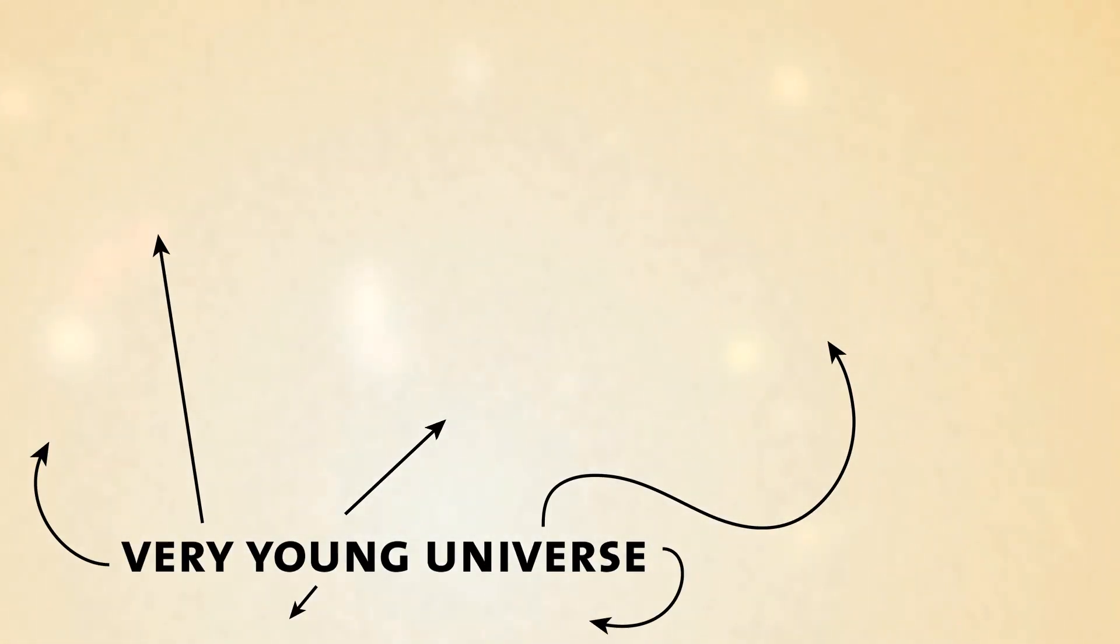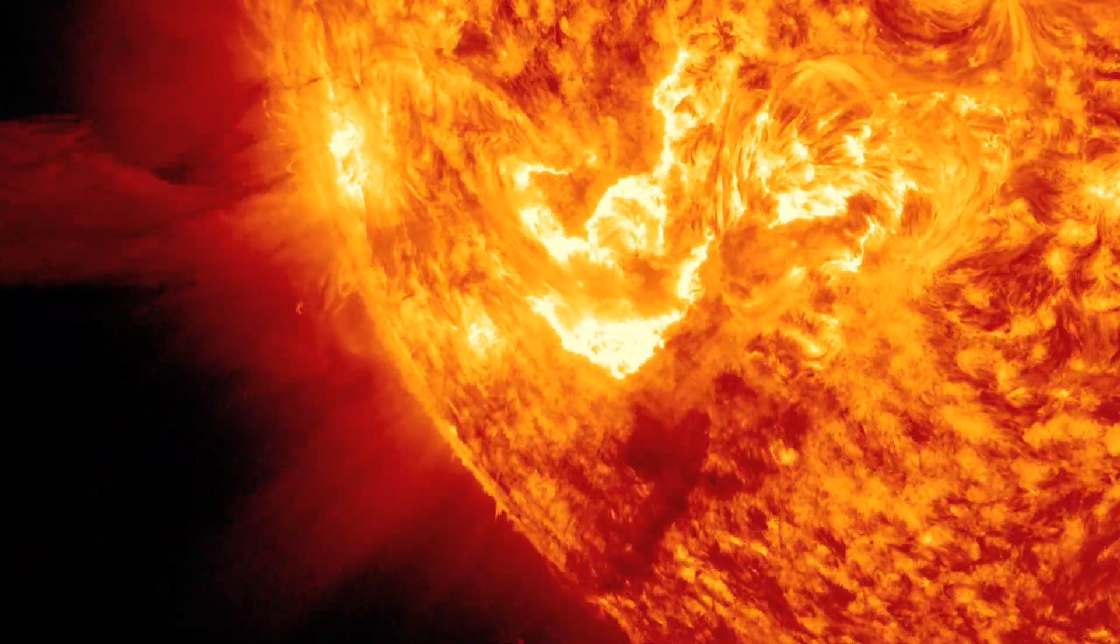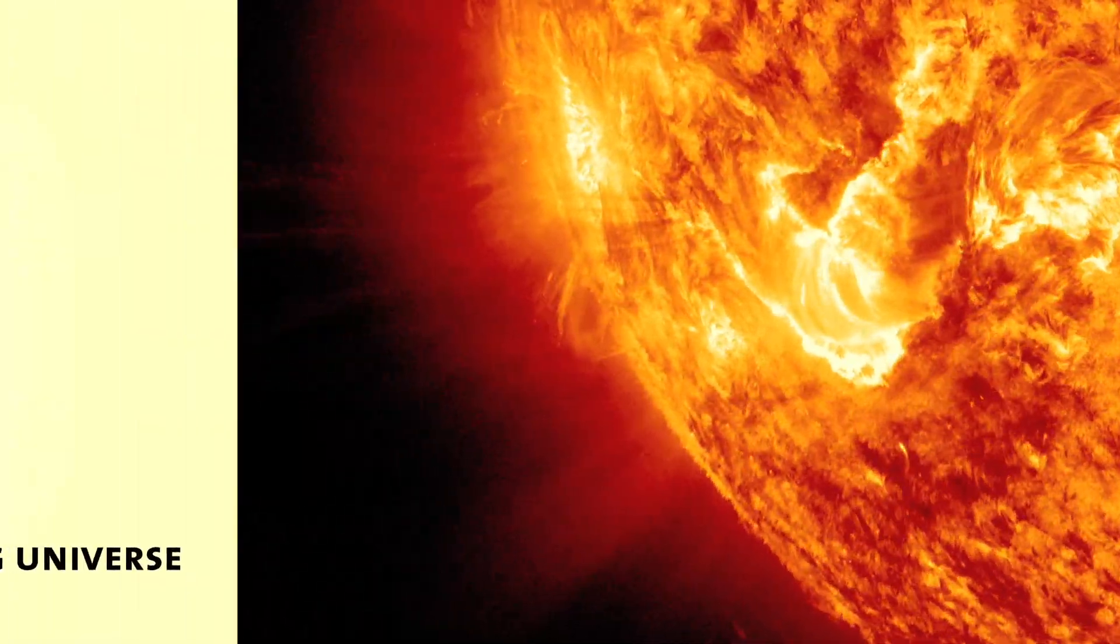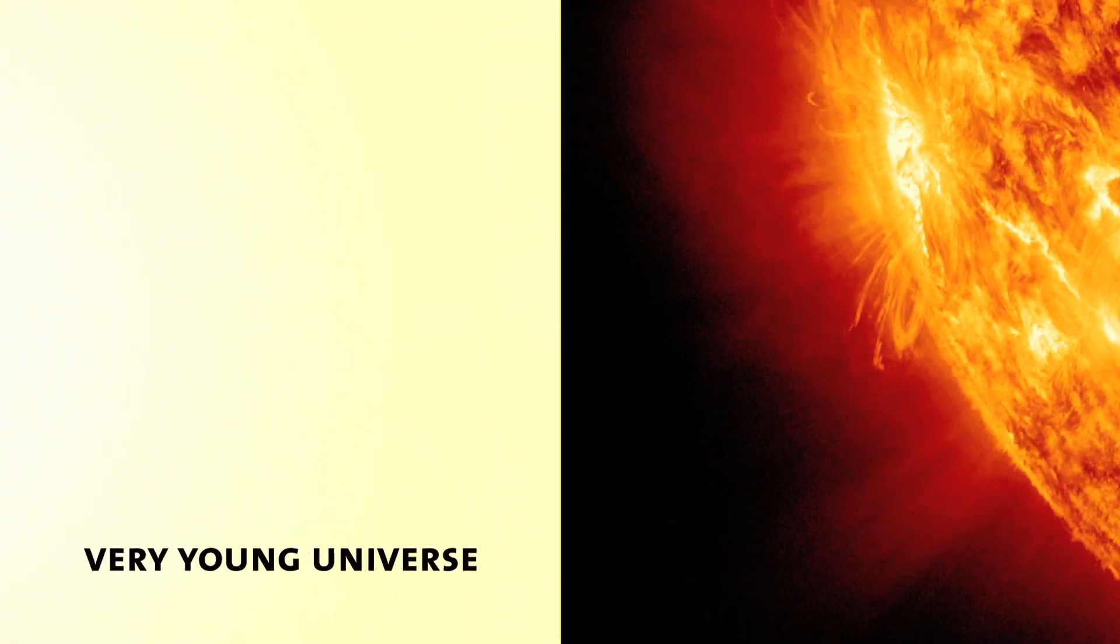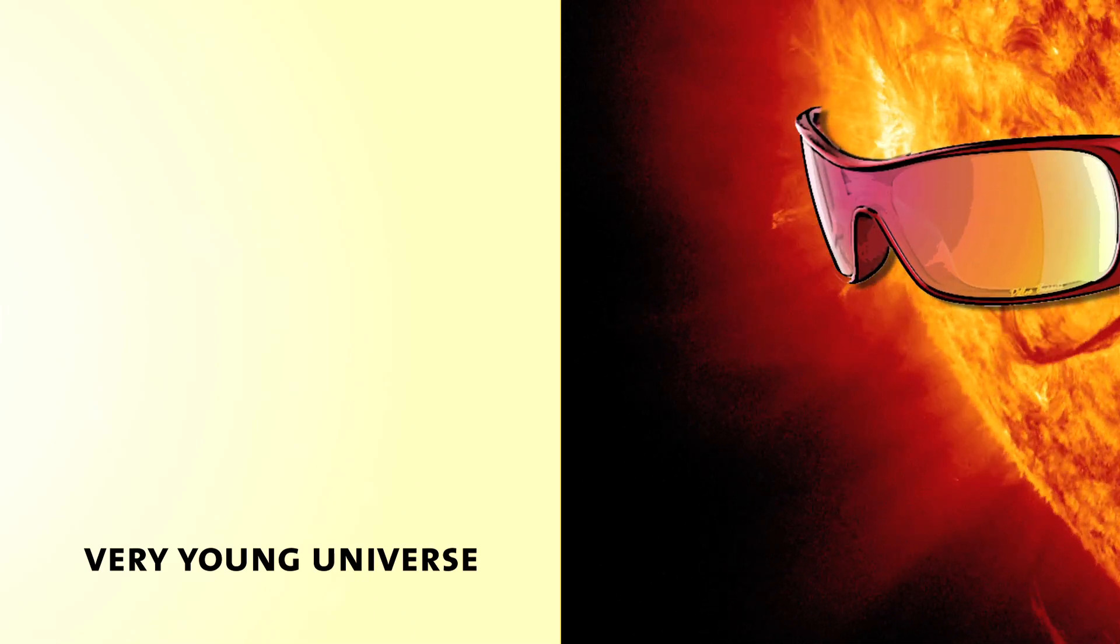Big Bang Theory suggests that the universe was once hotter than the surface of the sun. If there's one thing we know about the surface of the sun, it's that it emits light. What Big Bang Theory is claiming is that the entire universe was once that bright. If so, where is all that light?